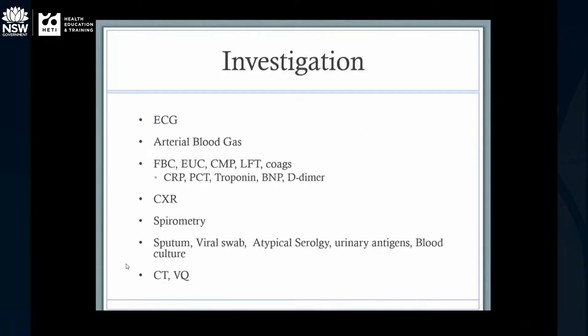Regarding investigations, it depends on the situation. Anyone significantly hypoxic or with a history of airways disease should have an arterial blood gas. Anyone significantly breathless should probably have an ECG. Blood investigations are important - check they're not anaemic, check renal function. In certain circumstances we might use CRPs, procalcitonins, troponins, BNPs, or D-dimers. Chest X-ray is very useful and really important, particularly for a first episode of breathlessness. Spirometry can be useful, not always. We may also do microorganism testing or further imaging with CT or VQ scans.